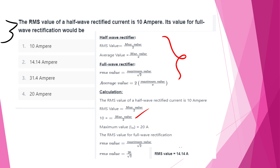The RMS value for full-wave rectification is maximum value divided by √2: 20/√2 = 14.14 Amperes. This is option B.